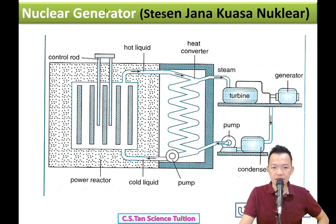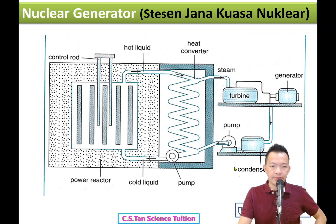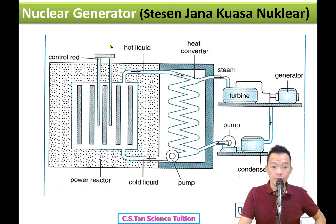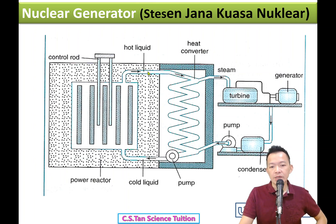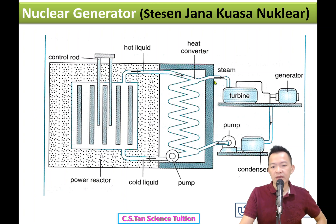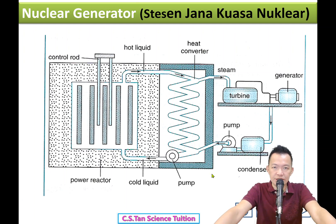Nuclear generator 核能发电站 - using radioactive substances like uranium, we carry out a nuclear reaction 核裂变反应. The heat energy from the nuclear reaction heats and boils water. The water becomes steam 水蒸气, which turns the turbines, which turn the dynamo, and produce electrical energy. It still uses steam - only the energy source is different 能量来自不一样的地方.